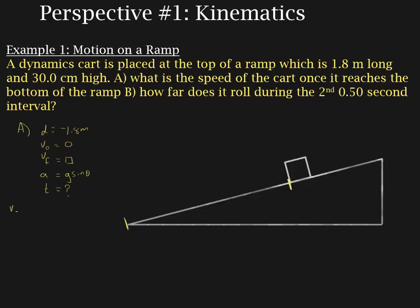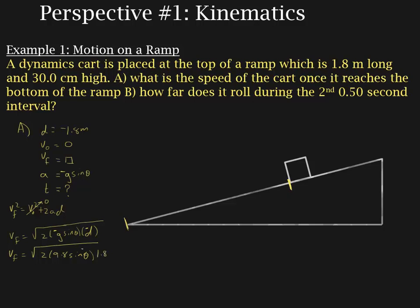So we're going to use V-final² = V-initial² + 2AD. V-initial is zero, so V-final = √(2·G·sin(θ)·D). Now, G·sin(θ) is going to be negative because the block is accelerating to the left in our new coordinate system. The negative on G cancels out with the negative on D. So V-final = √(2 × 9.8 × sin(θ) × 1.8). We've got to find theta.